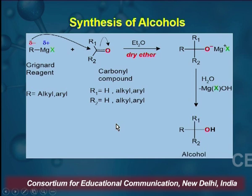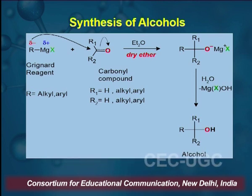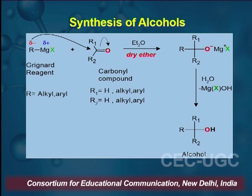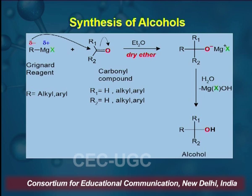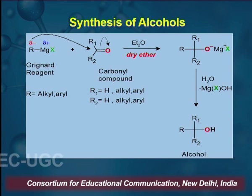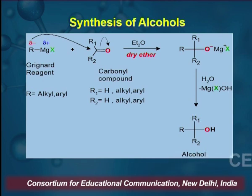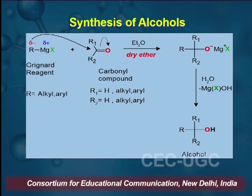Next is synthesis of alcohol. For synthesizing alcohol, Grignard Reagent is a versatile tool. RMgX on treatment with a carbonyl compound — where R may be aryl or alkyl and the carbonyl compound may have aryl, alkyl, or hydrogen — in dry ether results in the formation of Grignard Reagent, which on hydrolysis gives alcohol. R, R1, and R2 may be different substituents.